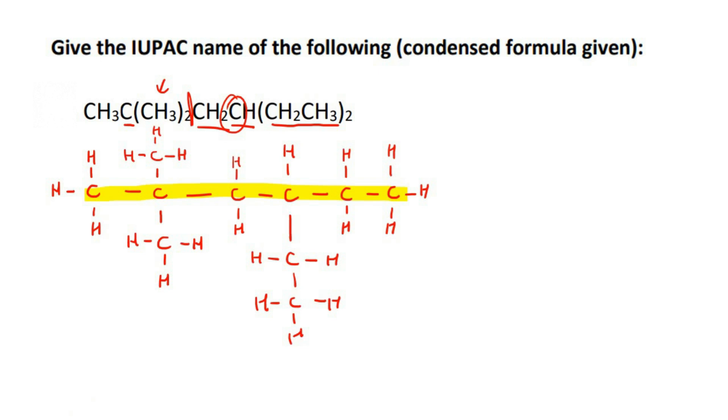And then everything else that is coming off that is the branch. So that's a branch, that's a branch, and that's a branch. We will start labeling from the left because that'll give us the lowest branch numbers. So that means this would be carbon one, this would be carbon two, three, four, five, and six.